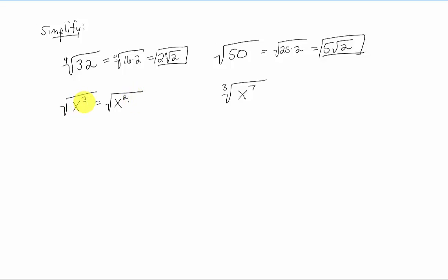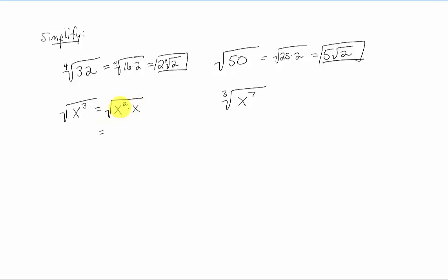Now, the square root of x squared, as we talked about in class, is the absolute value of x. So that's that piece right there. What's left is just the square root of x, which can't be simplified further. So that is the answer.